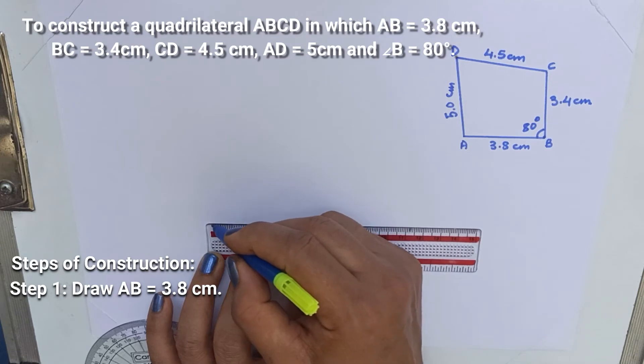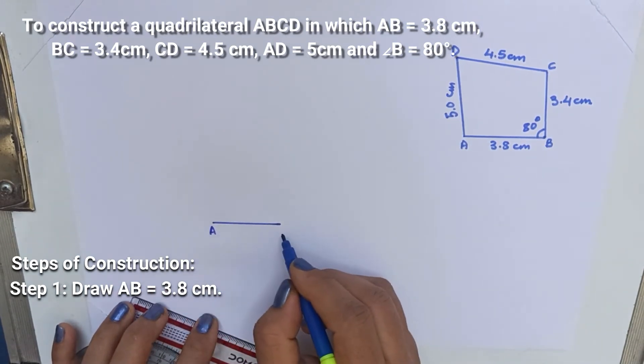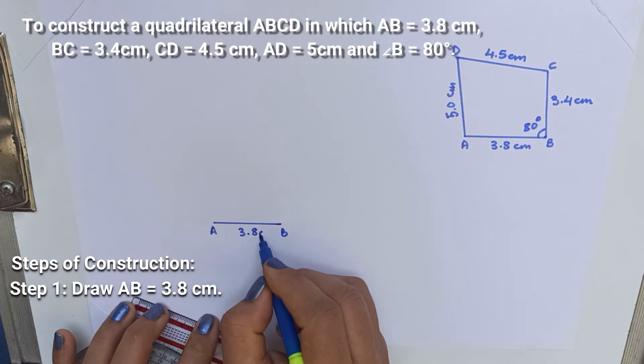Steps of construction. Draw AB equal to 3.8 cm. Label it A and B. Write the measure 3.8 cm.